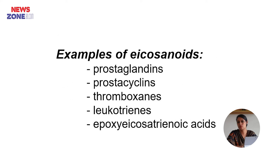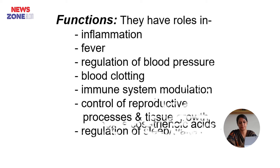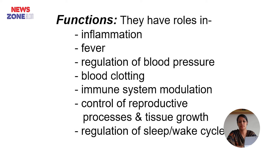Examples of Eicosanoids include prostaglandins, prostacyclins, thromboxane, leukotrienes, etc. Their functions include a role in inflammation, fever, regulation of blood pressure, blood clotting, immune system modulation, control of reproductive processes, tissue growth, and regulation of the sleep-wake cycle.